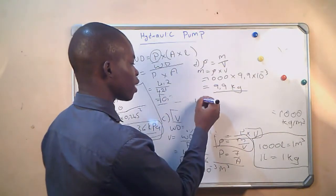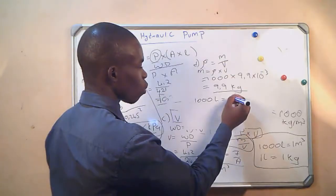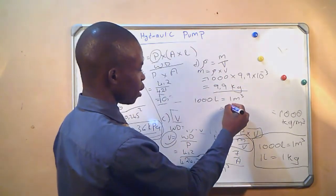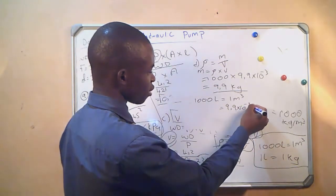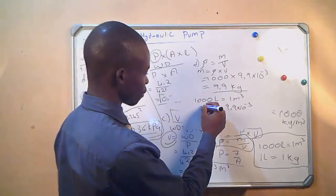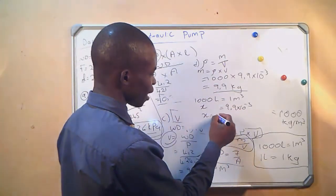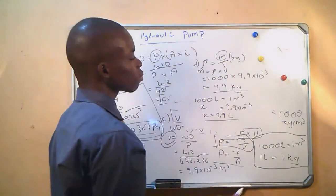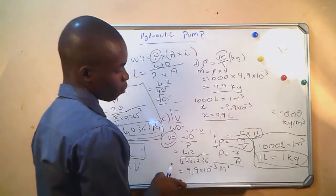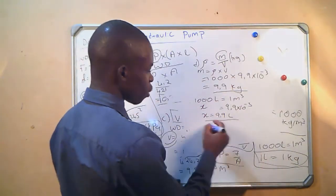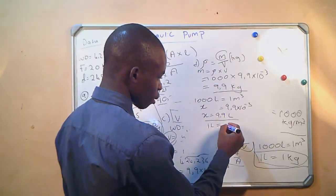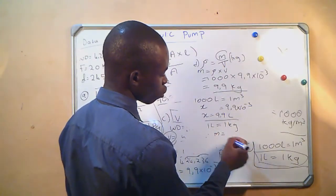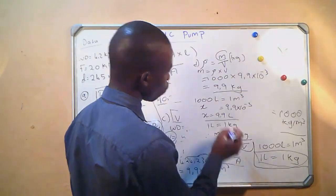We can also verify the mass using the unit scales. We said 1000 litres equals one cubic metre. We have a volume of 9.9 × 10⁻³ cubic metres, and cross-multiplying gives us 9.9 litres. Then using the second conversion — one litre equals one kilogram — our mass equals 9.9 kg, which is the same answer as before.